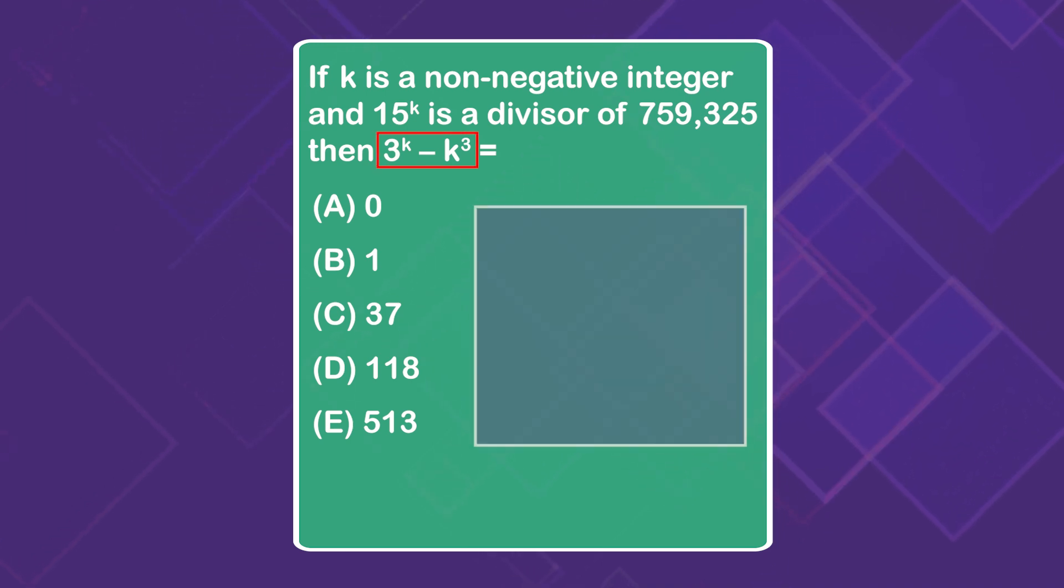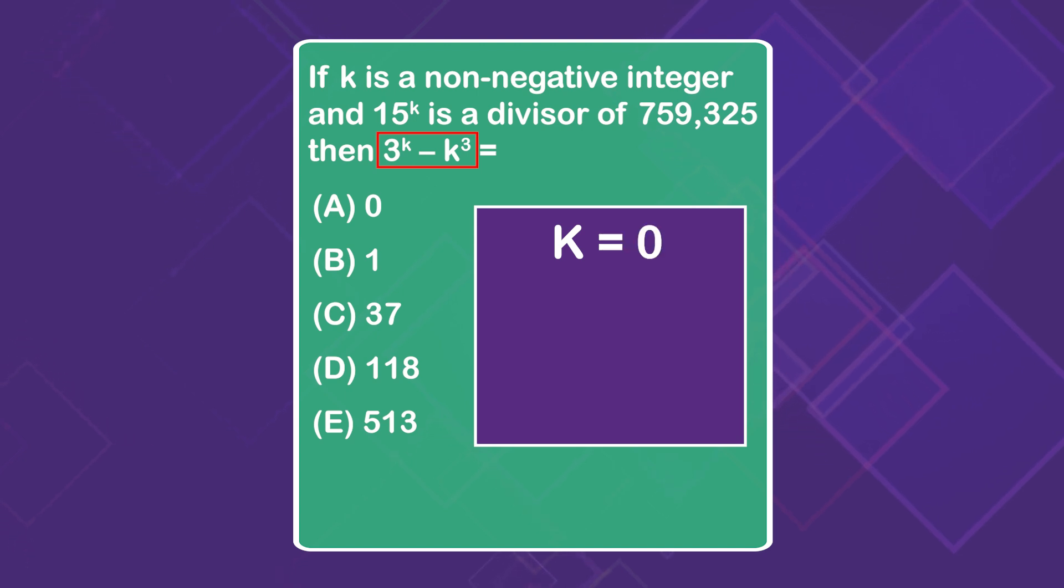So we're just going to plug in k equals 0. That's going to give us 3 to the 0 power minus 0 to the third power. Apply our exponent rules here because we don't have a calculator. Anything to the 0 power equals 1, 0 to any power equals 0. And so the answer, the final solution, is 1 minus 0 equals 1. That's answer choice B, and we select that and move on.